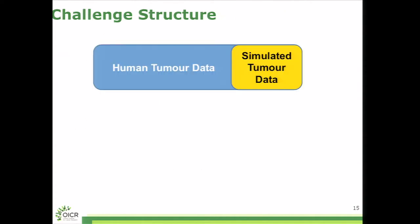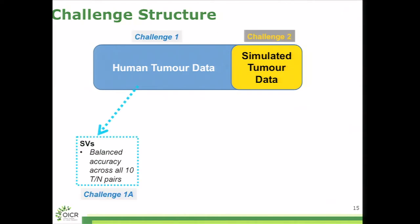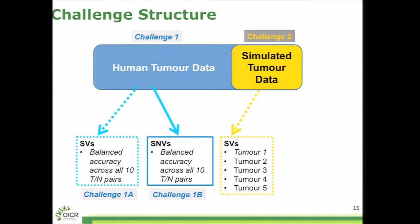The basic structure of the challenge is that we've got this human tumor data section and the simulated tumor section, kind of challenge one and two. We're looking at both structural variations, for the tumor data, and single nucleotide variations. Both are being assessed using balanced accuracy. From the simulated data, we have each individual tumor for structural and single nucleotide variations. So there's a lot of sub-challenges and opportunities for people to feed back and see how their algorithms work.